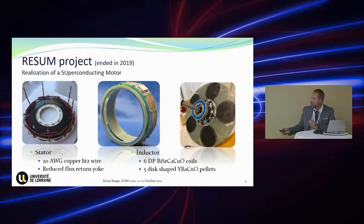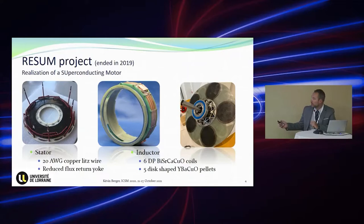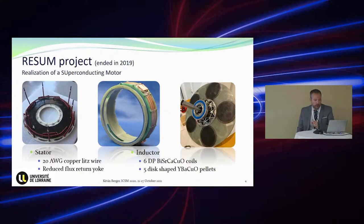You can see some pictures here. The stator is more or less conventional — copper windings with a reduced thickness flux return yoke. You can see the six double-pancake BSCCO coils; we used these because of the price of BSCCO at the time and the project budget. You can also see the bulks on the rotating parts — these bulks are approximately 8 centimeters in diameter, which is really huge, and at that time they were the most powerful superconductors we could use in the machine.